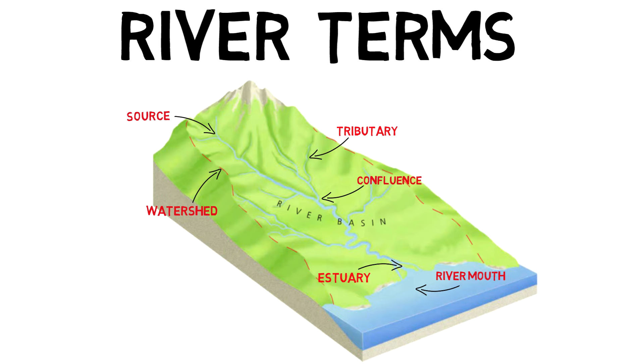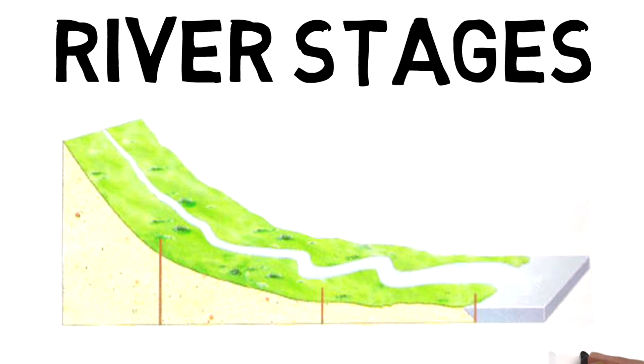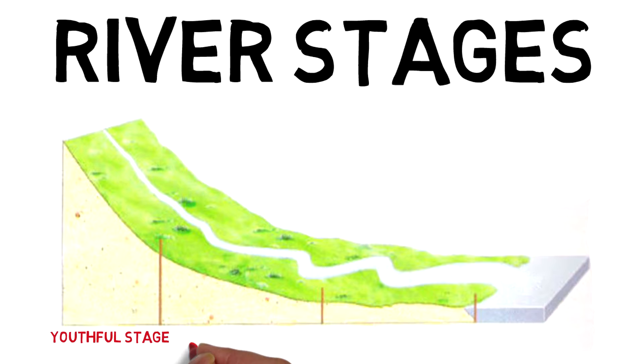Now that we have all the terms out of the way, we can move on to the three different stages of the river. The river can be separated into three different stages: the youthful stage, the mature stage, and the old stage.